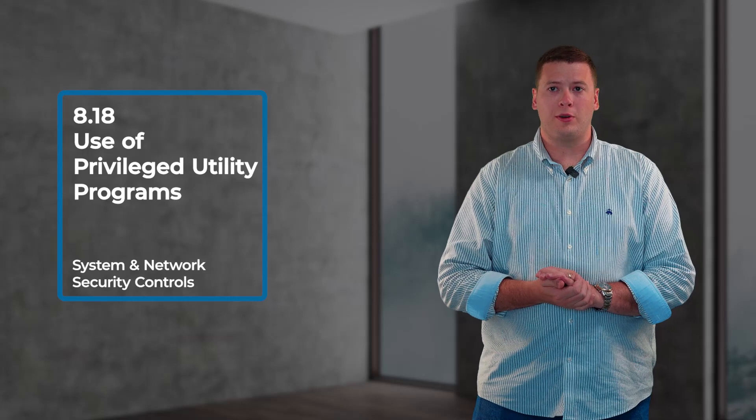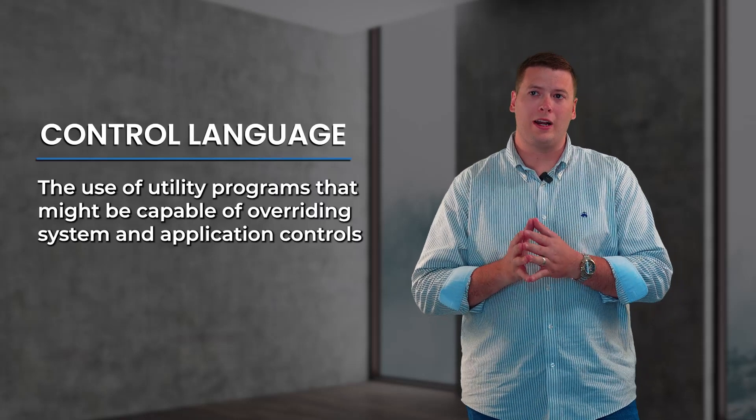The next control is 8.18, use of privileged utility programs. This control has been misconstrued in the past, so they've updated the control language to specifically call out what a privileged utility program is. It says the use of utility programs that might be capable of overriding system and application controls should be restricted and tightly controlled. On a laptop, this means administrative privileges — things that could override any security controls an administrator puts on that device or asset. Sit down, have the conversation, and document your approach to the use of privileged utility programs.